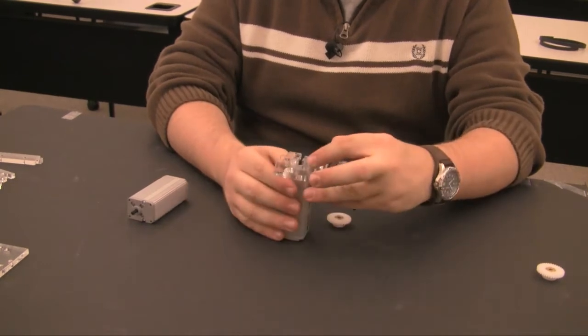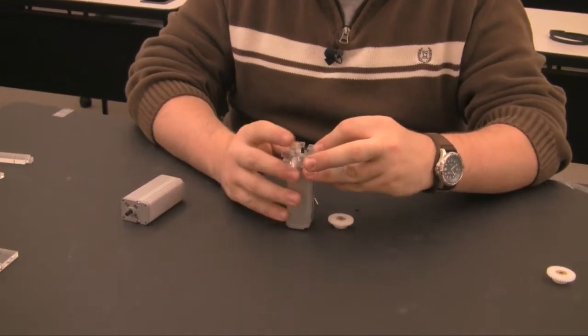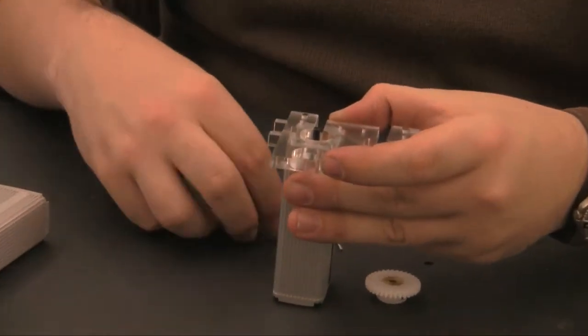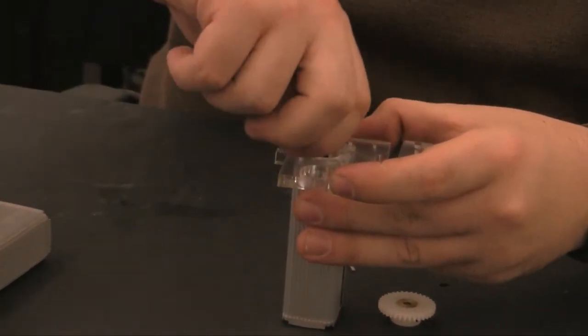Take the motor and place it underneath the drive interface. Using the screws that came with the snap motor, secure it to the drive interface.